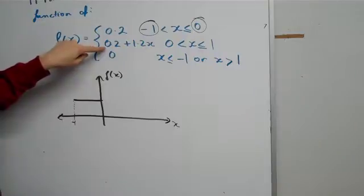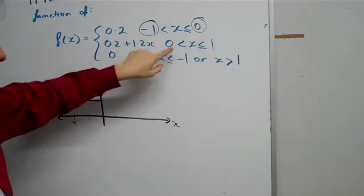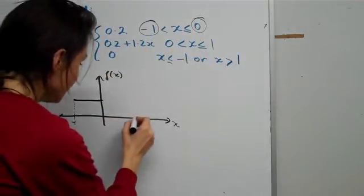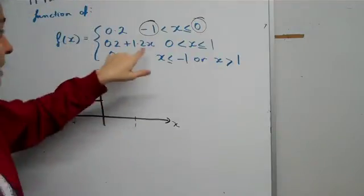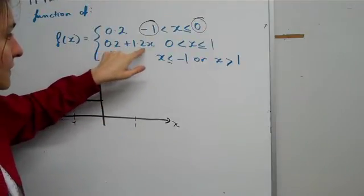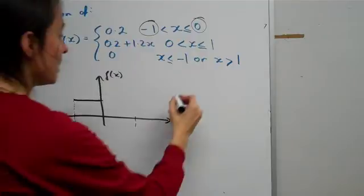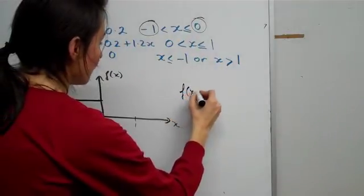The next graph tells us that between 0 and 1, we basically have to follow this linear relationship. So let's just write out the formula.